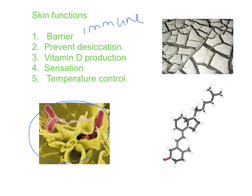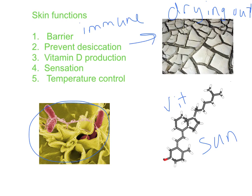The skin helps prevent desiccation, or drying out — essentially dehydration. One of the big concerns with burn patients is that when they lose those outer layers of skin, they are constantly losing fluid. The skin also produces vitamin D when it interacts with the sun. We produce inactive forms of vitamin D in our body, and the UV light from sun exposure turns it into active vitamin D.